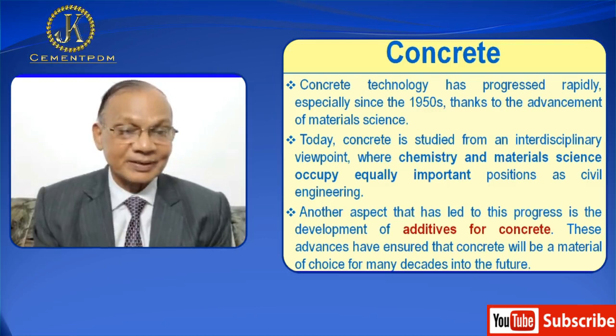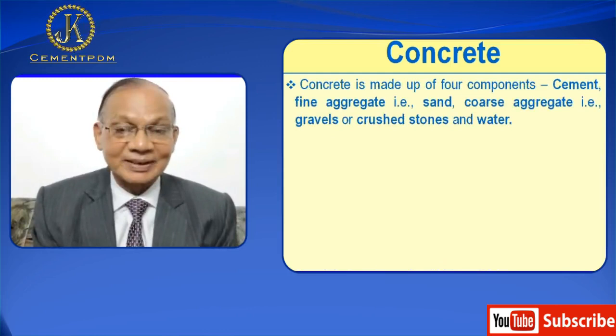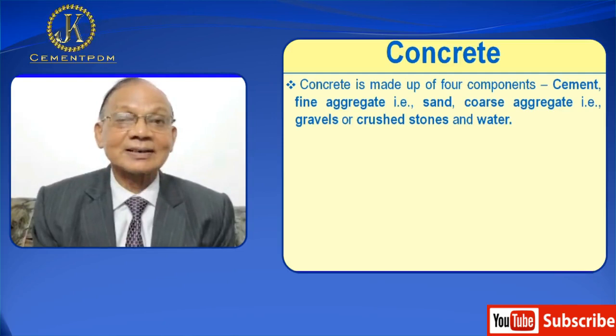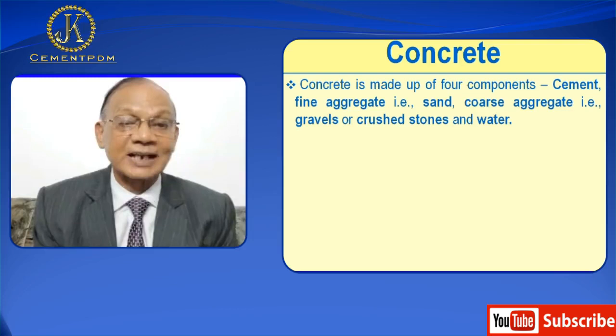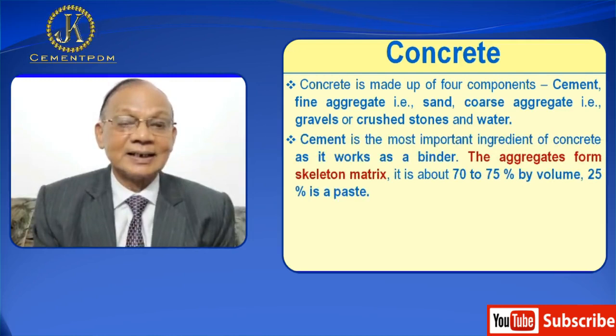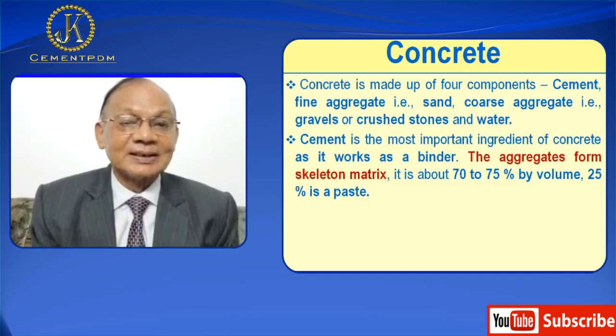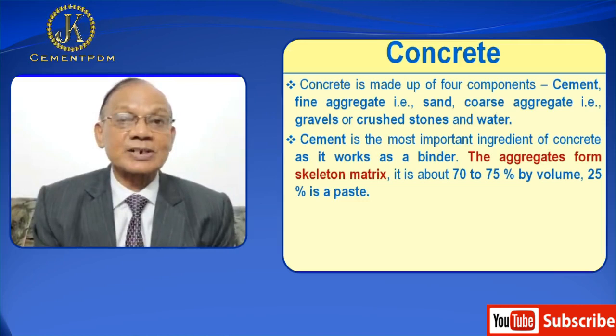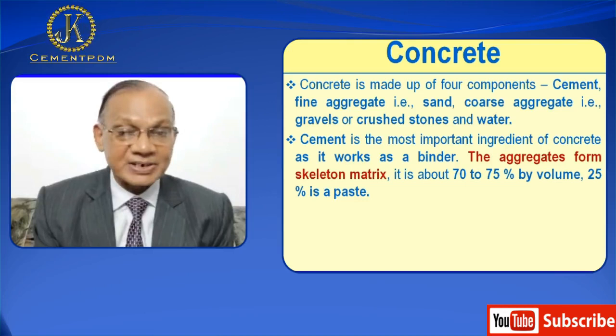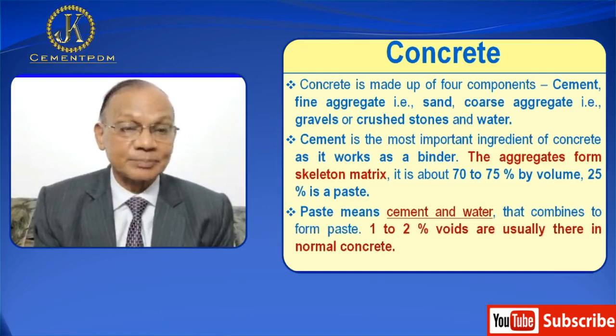Now let us first understand what concrete is. Concrete is made up of four components: cement, fine aggregate that is sand, coarse aggregate that is gravels or crushed stones, and water. Cement is the most important ingredient of concrete as it works as a binder and provides strength. The aggregates form the skeleton matrix, constituting about 70 to 75 percent by volume. The remaining 25 percent is paste — cement and water that combine to form paste. One to two percent voids are usually present in normal concrete.